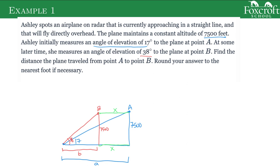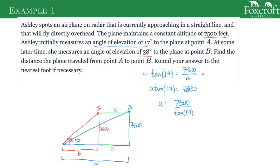Let's focus on the blue triangle first. With my 17 degree angle, the 7,500 is opposite and the bottom along the bottom is adjacent, so I'm going to use tangent. Tangent of 17 is opposite over adjacent: 7,500 over the a value I'm trying to find. I solve in two steps by multiplying by a and then dividing by tangent of 17, so 7,500 over tangent of 17. When we put that in the calculator — make sure your calculator is in degrees, because there's two settings for these trig functions — I type in 7,500 divided by tangent of 17 and I get 24,531.4. That's the big distance there for a.